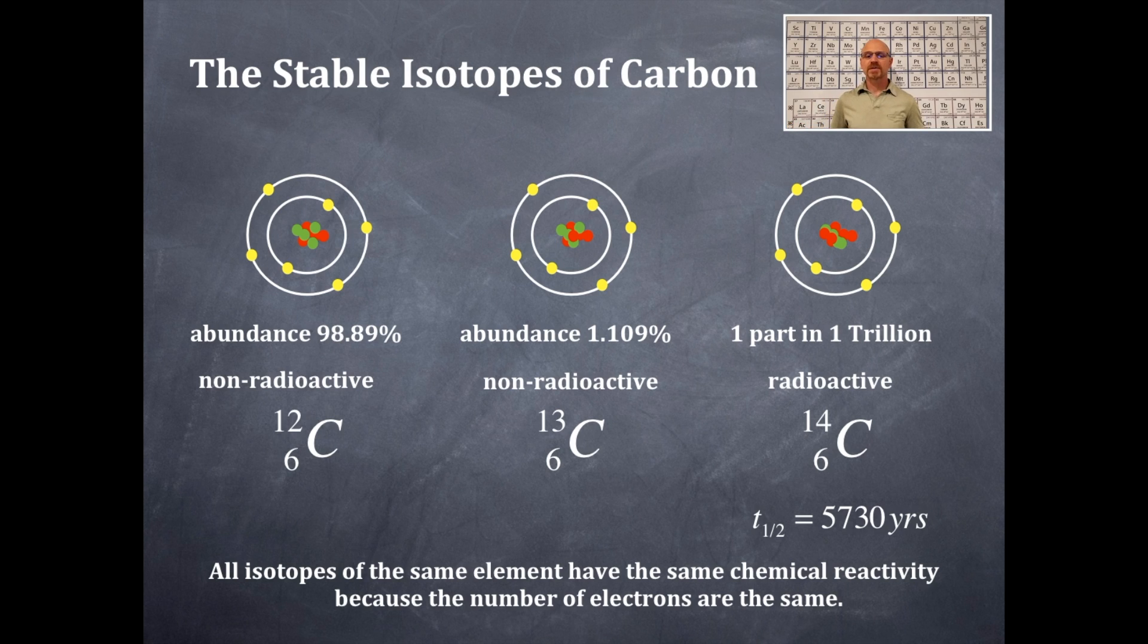All the isotopes of the same element have the same number of protons, therefore the same element of carbon, have the same chemical reactivity because they have the same number of electrons. That's why. The average mass of all the stable isotopes of carbon is 12.0107. That is taking its mass, multiplying it by its percentage, and then summing them up, and that's the number that you get.